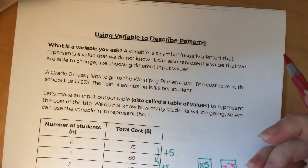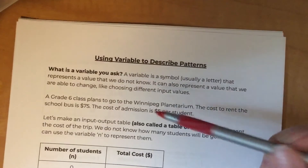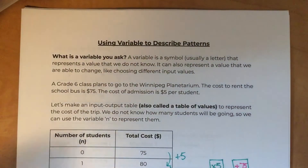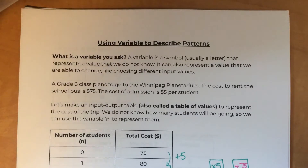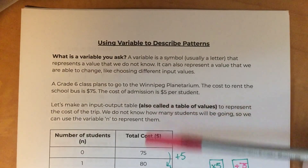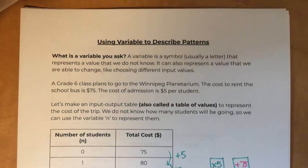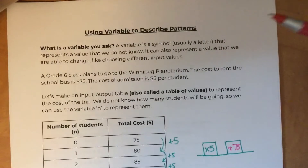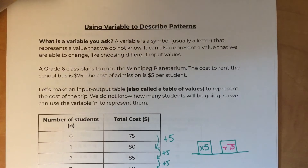Our next day is using variables to describe patterns. Variables are a symbol or letter that represents something we do not know or want to find. A variable usually represents the input — values that we can decide on and change. Based on what we change it to, it will spit out a different output value according to whatever rule is applied.